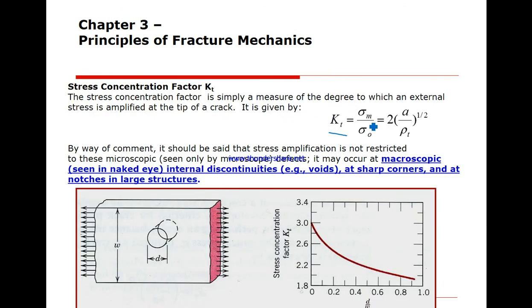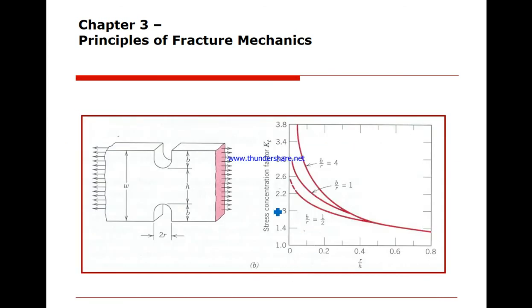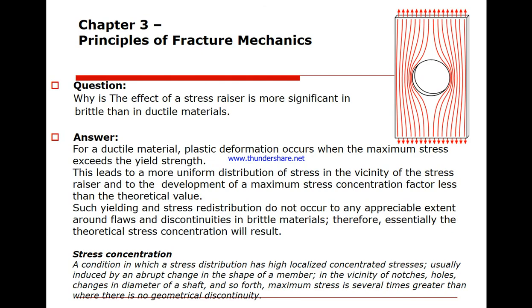Similarly, the stress concentration factor K_t equals sigma_m divided by sigma zero. For a component with a hole of dimension d within a component of width w, the ratio d over w is used together with a K_t chart or equation, applying the same approach.